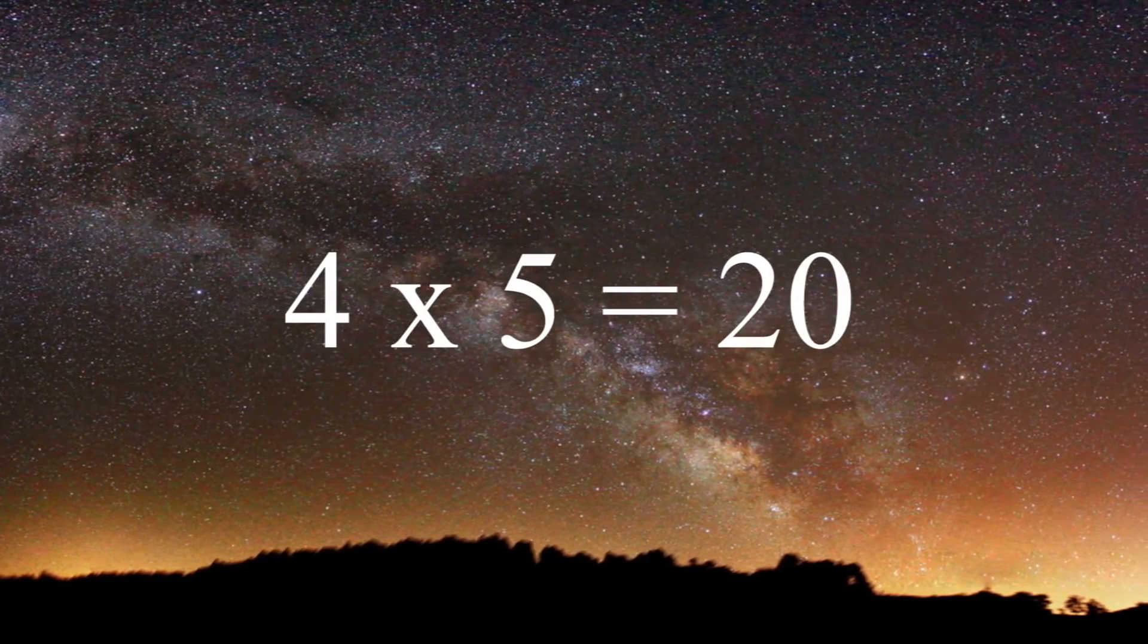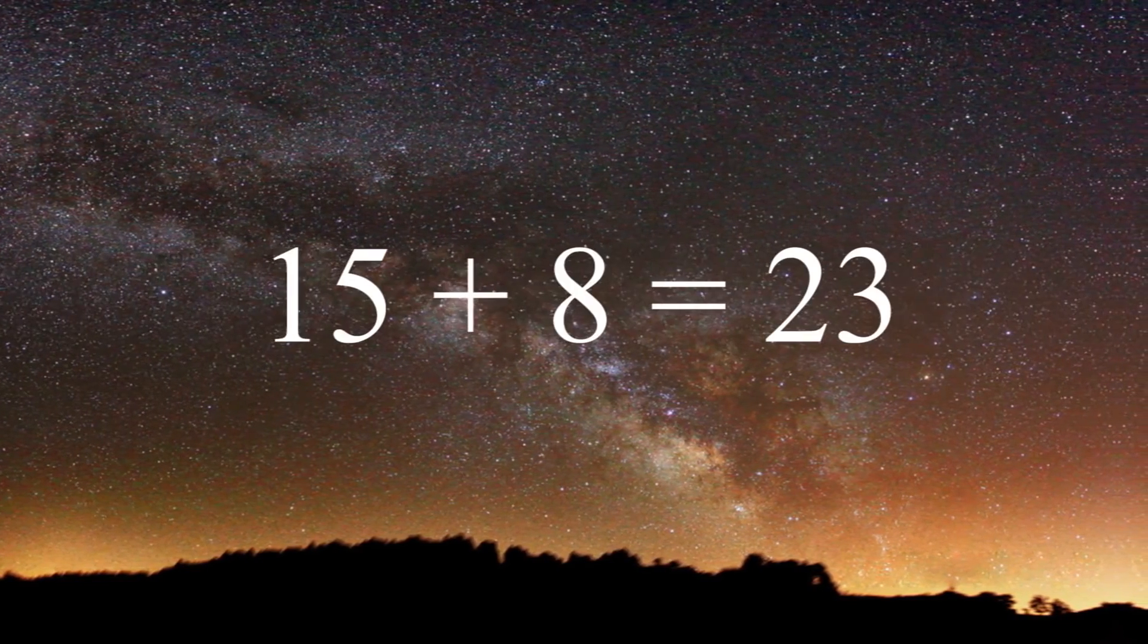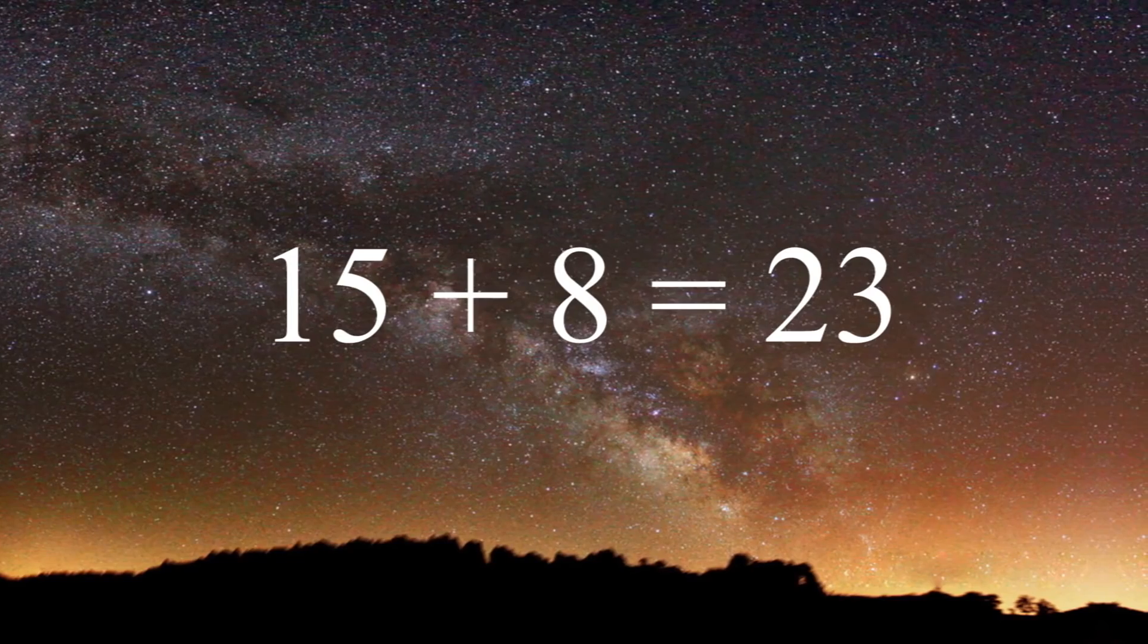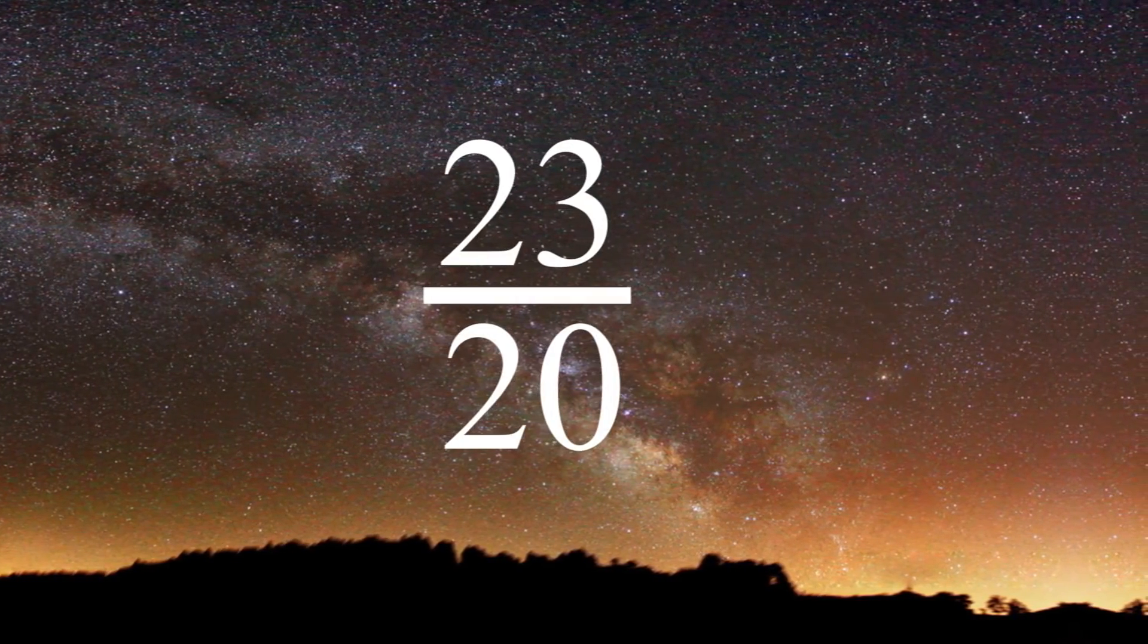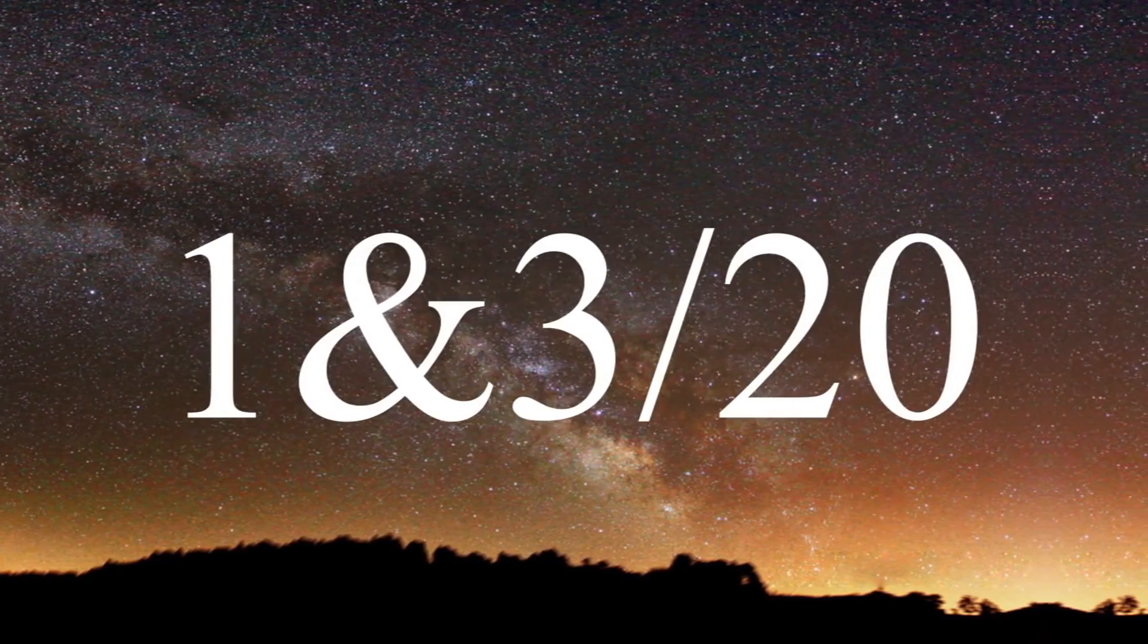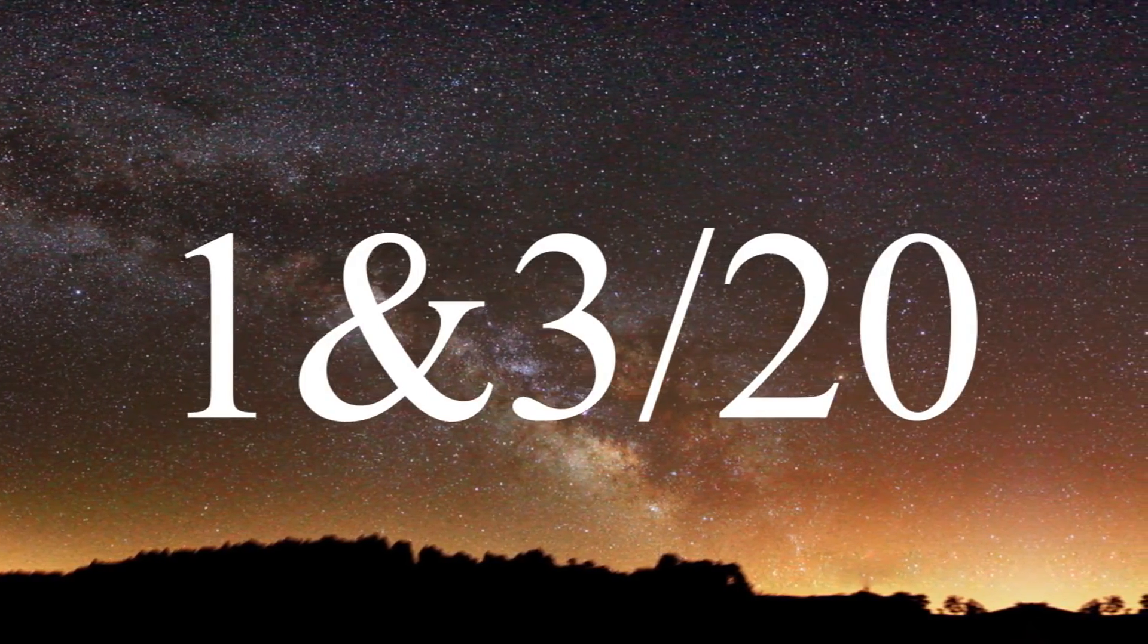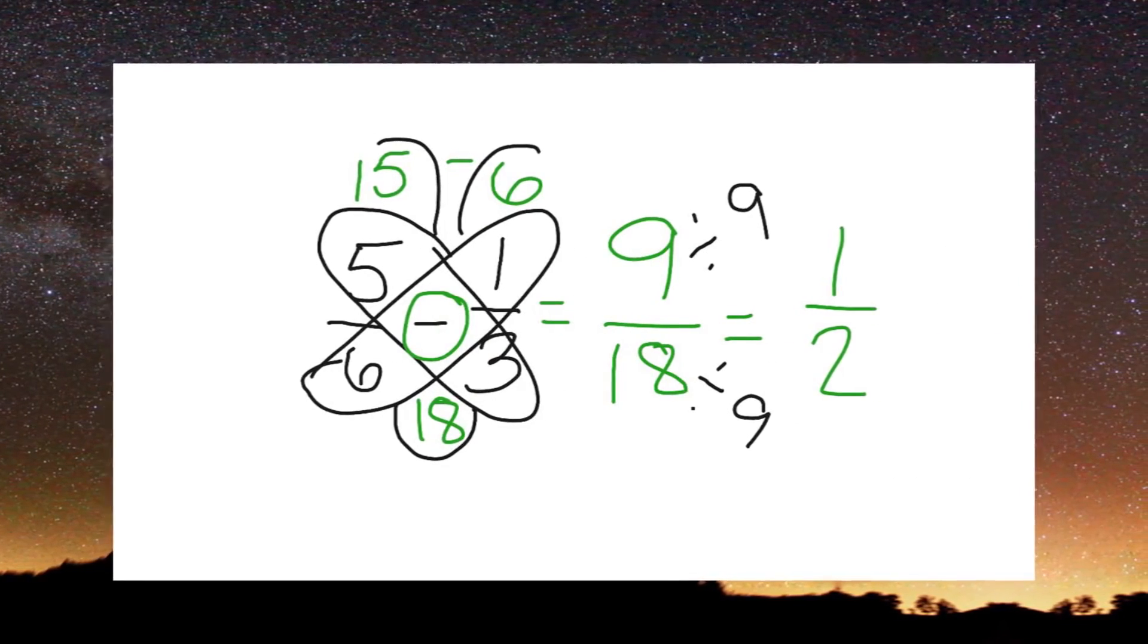Next, multiply the two bottom numbers. 4 times 5 equals 20. Finally, add the top two answers. 15 plus 8 equals 23. And you have the 20 from the bottom numbers, giving you 23-twentieths. Finally, simplify that number down to 1 and 3-twentieths. When you figure it out this way, you don't need to find the common denominator.